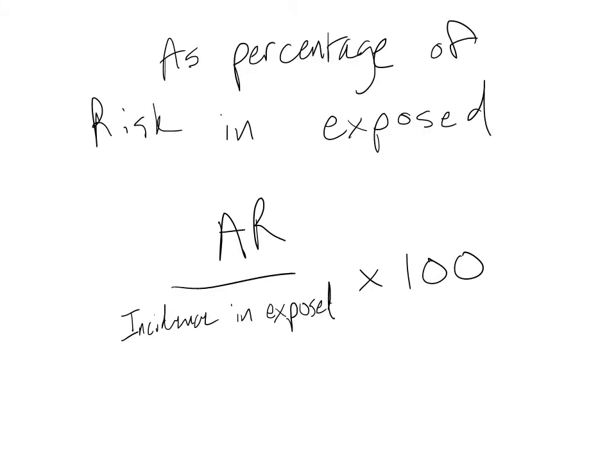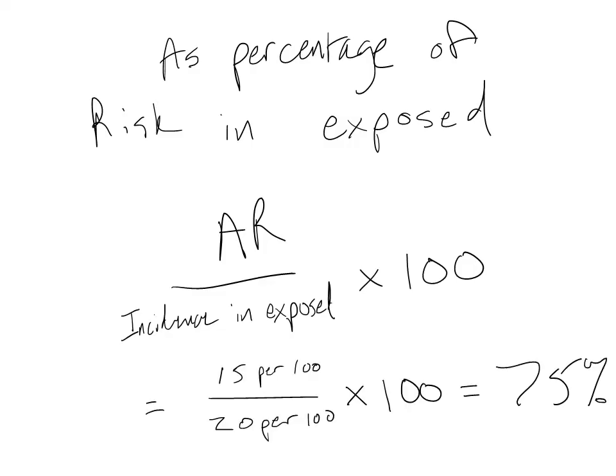Attributable risk is often presented as a percentage of the total risk in the exposed. This is calculated by dividing the attributable risk in the exposed by the total incidence in the exposed and multiplying by 100. In our example, the percent attributable risk in the exposed is 75 percent. This means that 75 percent of the incidence of cardiovascular disease among smokers is attributable to their smoking. In other words, based on these hypothetical numbers, if smokers did not smoke, we would expect their risk of cardiovascular disease to decrease by 75 percent.